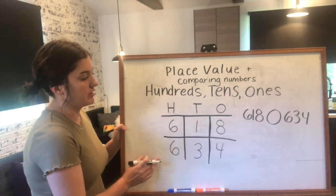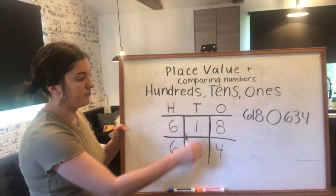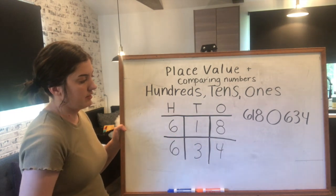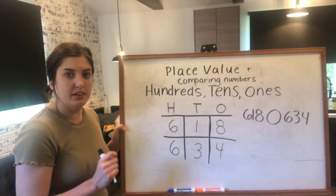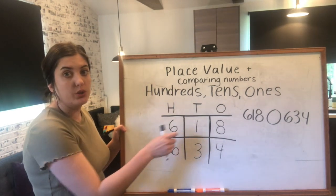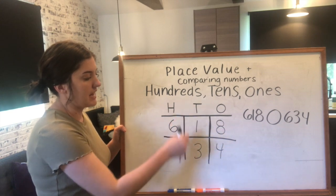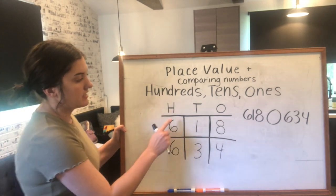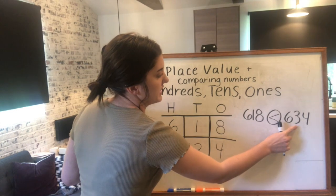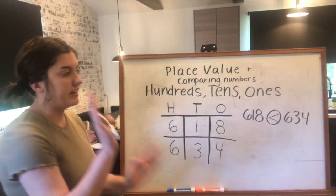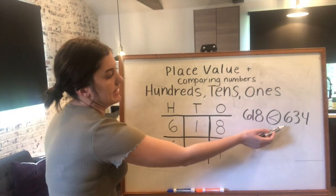Next we move to the tens column. For 618 there is one ten, and for 634 there are three tens. Is one greater than or less than three? One is less than three — three is a bigger number. Because 634 has more tens, we can say 618 is less than 634. The alligator eats 634 and points away from 618.